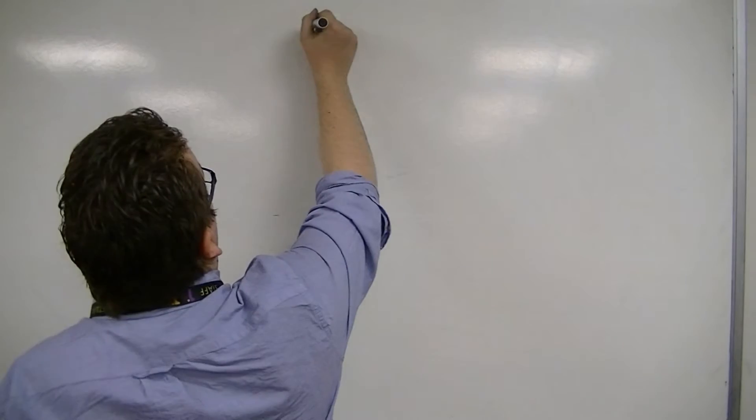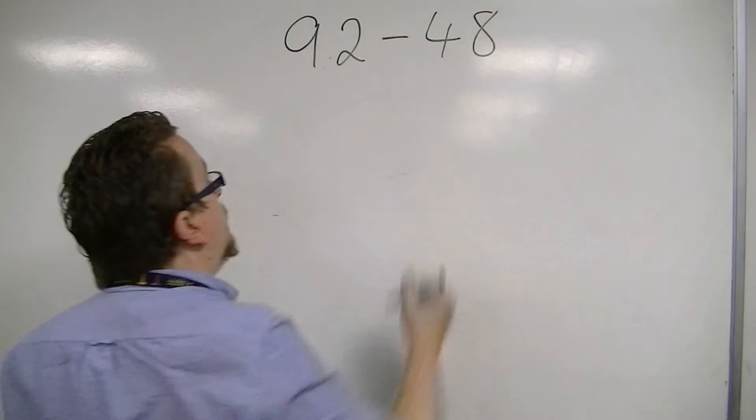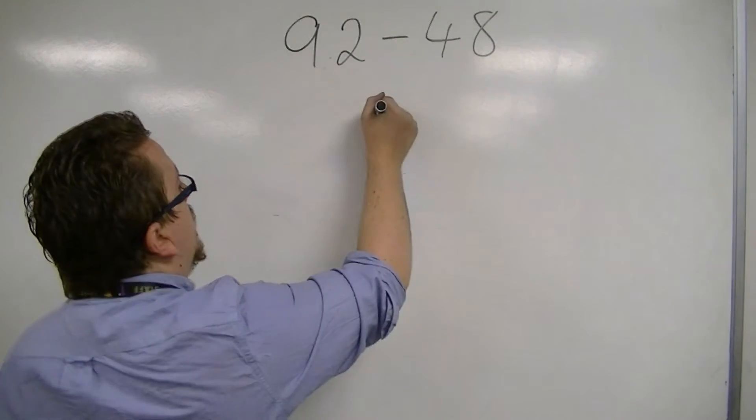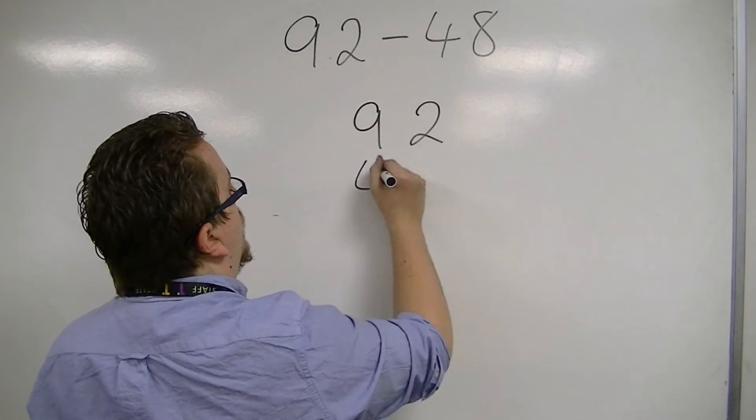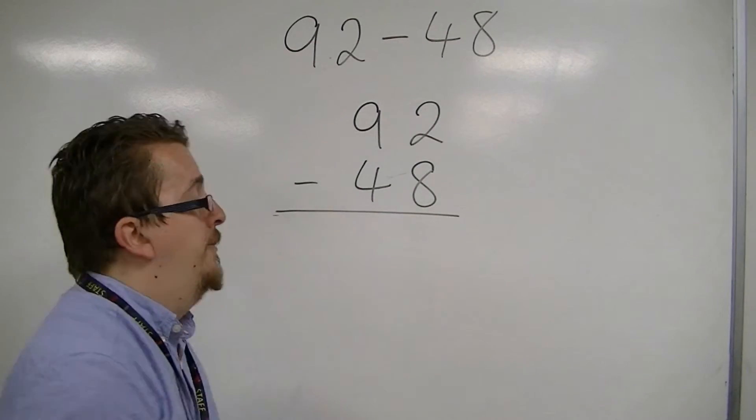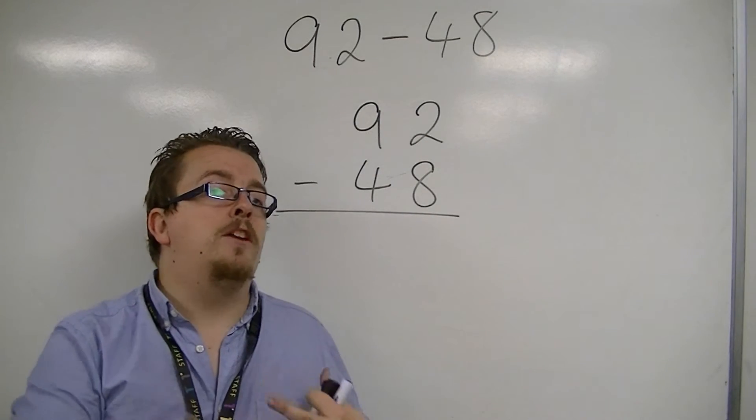What if we're dealing with something like 92 take away 48? Well, we would set it up in very much the same way. 92, 48. Working from the right to the left, we have 2 take away 8, which we can't actually do.